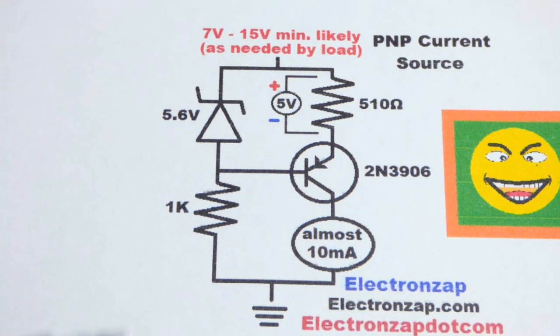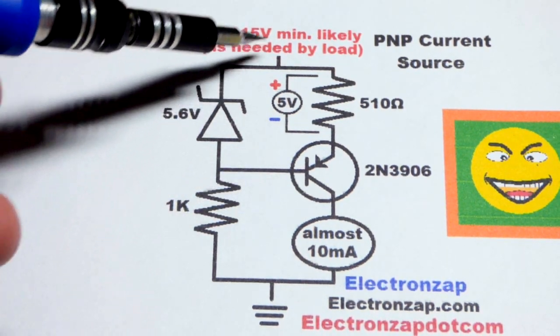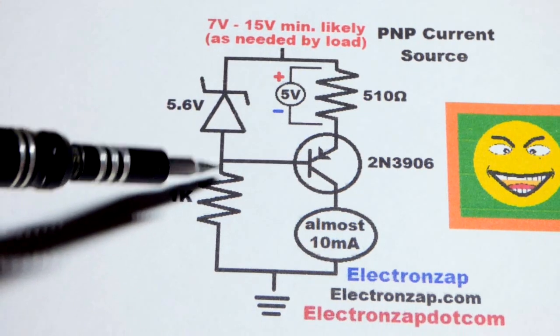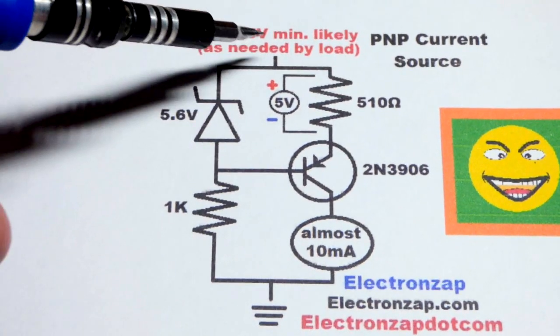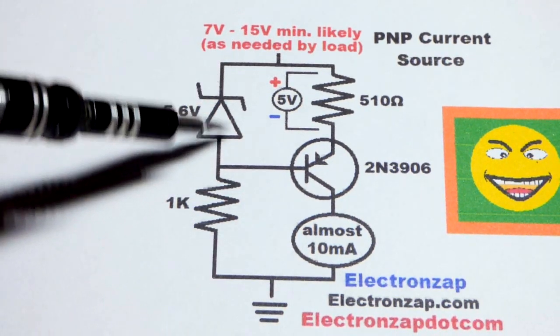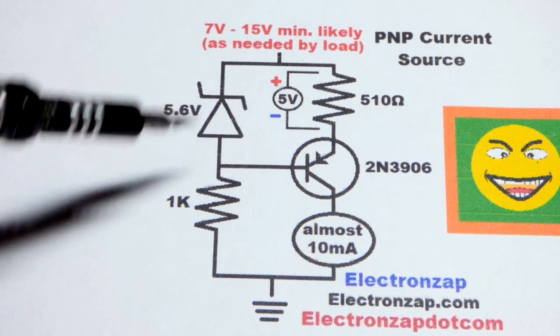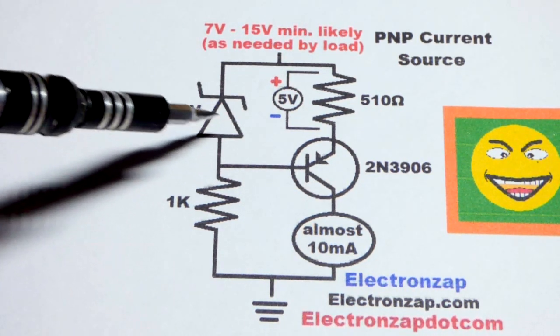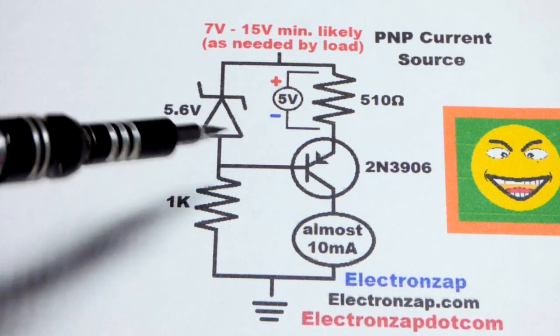Just like with the NPN bipolar junction transistor, but this time the zener diode is on the more positive side and its current setting resistor is on the more negative side. So current is going to flow through its reverse bias so it drops about 5.6 volts because that's the value I selected. You select the value you want to, always remember that.